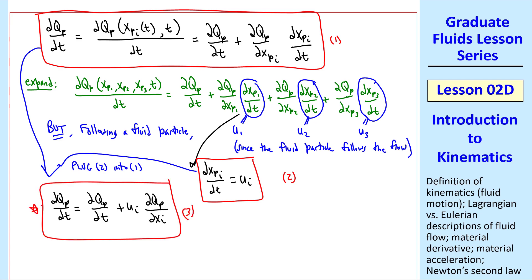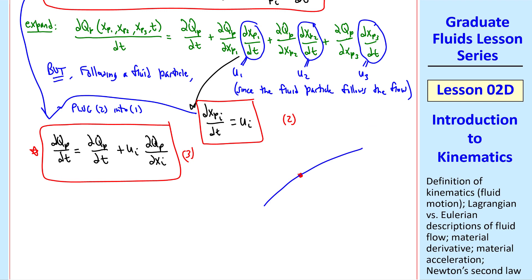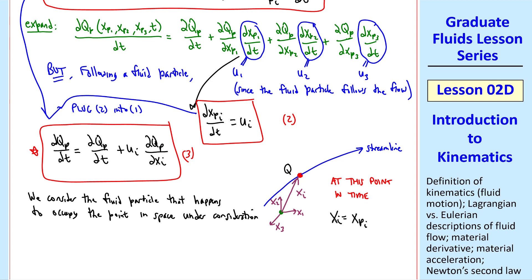We plug equation 2 into equation 1. We get dqp dt equal del qp del t plus ui del qp del xi. This will be our equation 3. Now here's the tricky part. This is our fluid particle at some point in the flow, and this is a streamline, and this fluid particle has some property q. We define some origin at this location, and at this instant in time, xi is the position vector of our fluid particle. Now we consider the fluid particle that happens to occupy the point in space, that is this red point here, under consideration. So we argue that at this point in time, xi is the same as xpi. This vector is the same, since we're talking about this particle at this time. And qp equal q.